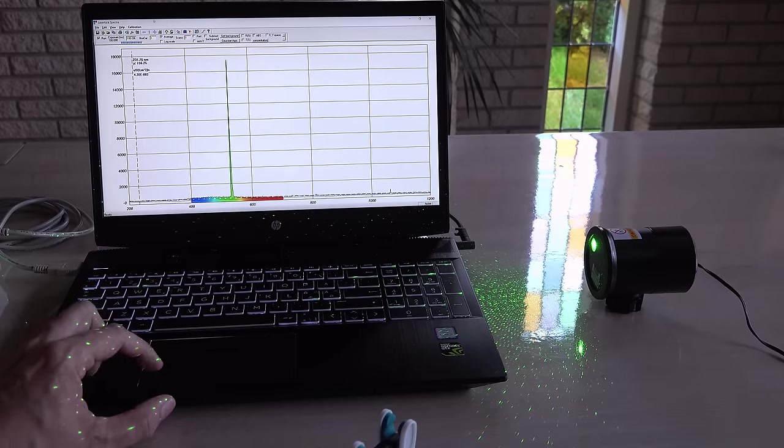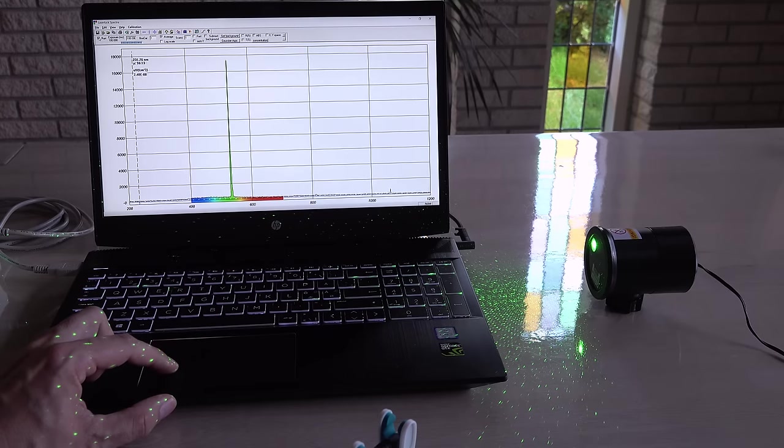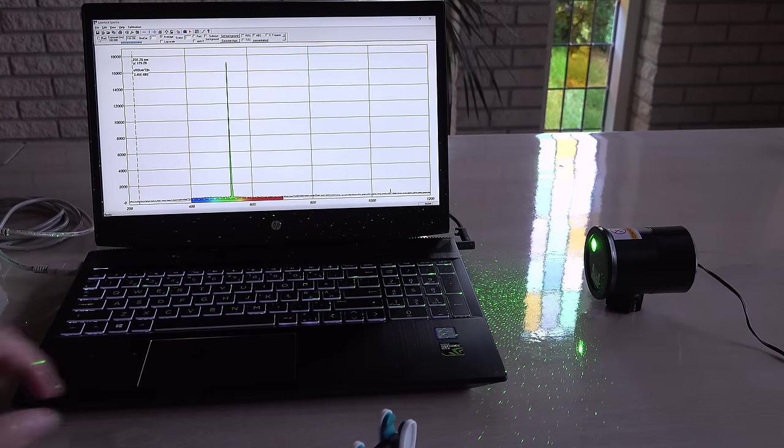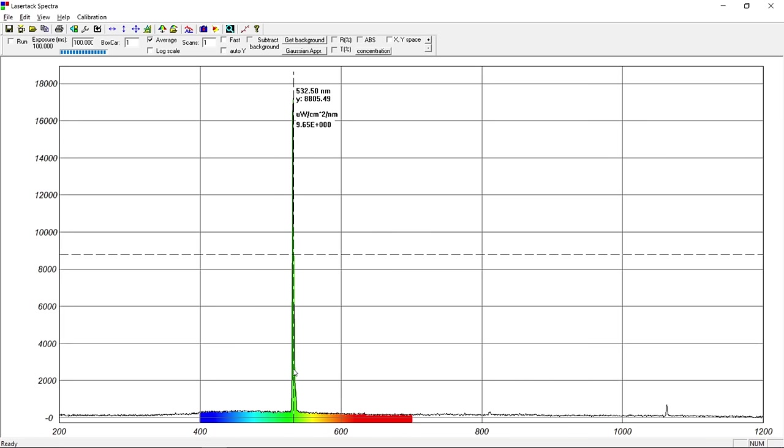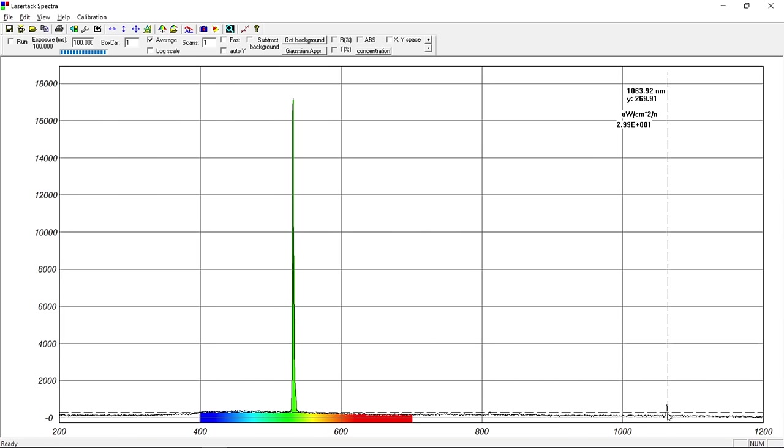Here's a quick test on the spectrometer. The red laser is taped over and the warm green laser shows very little infrared leakage. This looks like the spectrum from a well-filtered DPSS laser. Good.